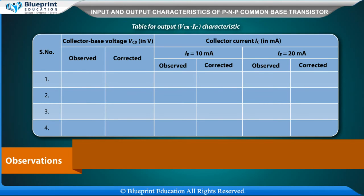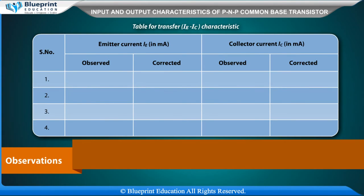Table for output VCB–IC characteristic: collector-base voltage VCB in volts (observed/corrected), collector current IC in mA, for IE = 10 mA and IE = 20 mA. Constant value of VCB = minus 4 V. Table for transfer IE–IC characteristic: emitter current IE in mA (observed/corrected), collector current IC in mA (observed/corrected).